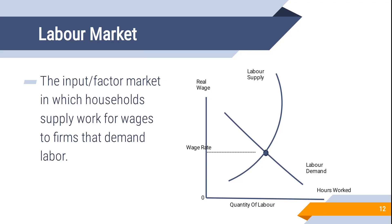Labor is an input used to get output. In the labor market, producers use this input and offer wages in return. Higher wages lead labor to offer fewer hours of service. The labor supply curve first moves upward, reaches a maximum level, and then bends backward — because at some point a person feels they are earning enough and doesn't need to work part-time. On the x-axis we have hours offered and on the y-axis we have wages.